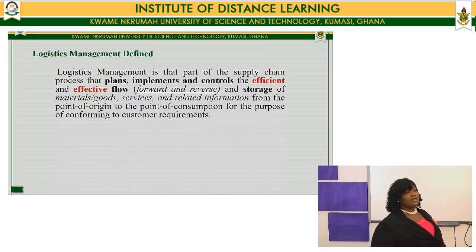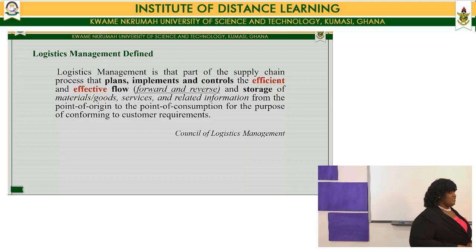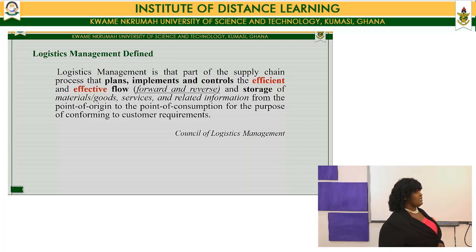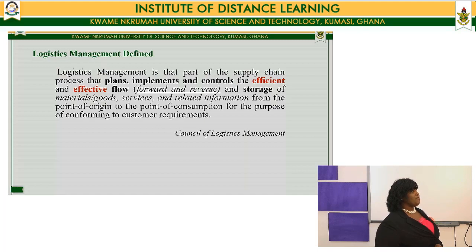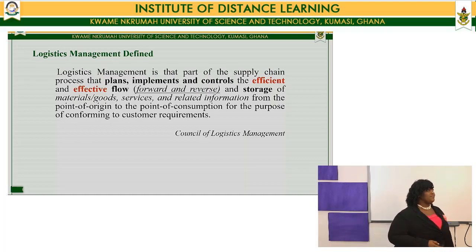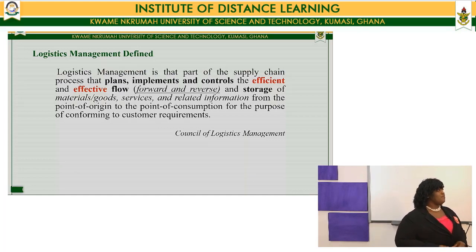Let's take a look at a very simplistic definition of Logistics Management according to the Council of Logistics Management. In their definition, they say Logistics Management is that part of the supply chain process that plans, implements, and controls the efficient and effective flow — both forward and reverse flows — and storage of materials or goods, services, and related information from the point of origin to the point of consumption for the purpose of conforming to customer requirements.